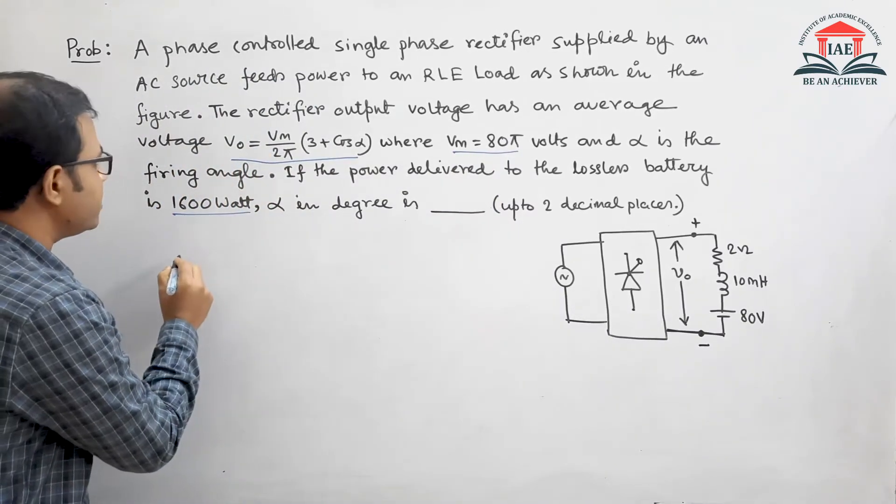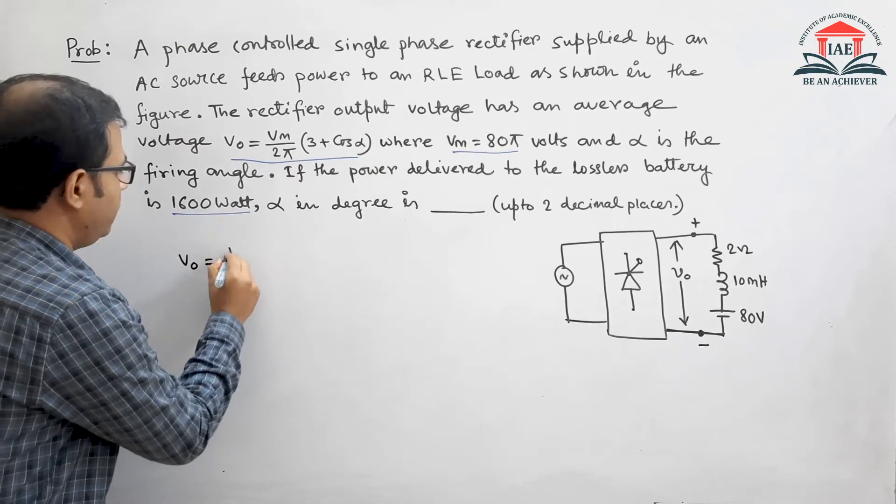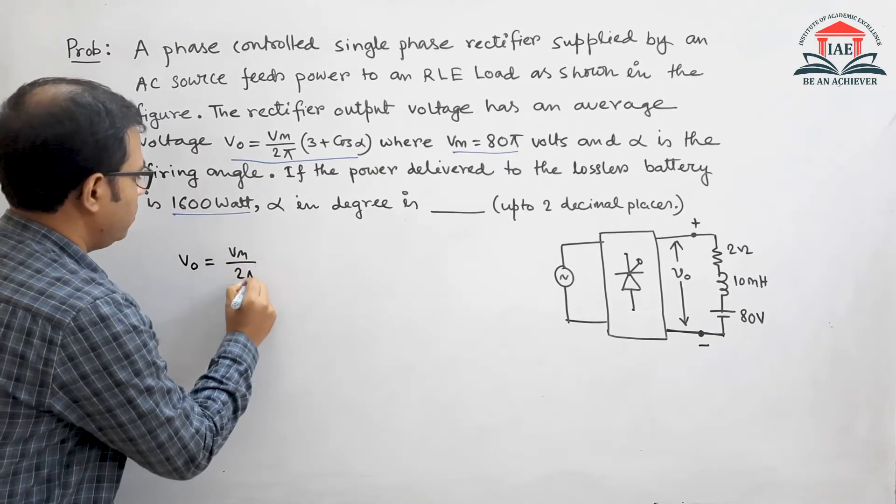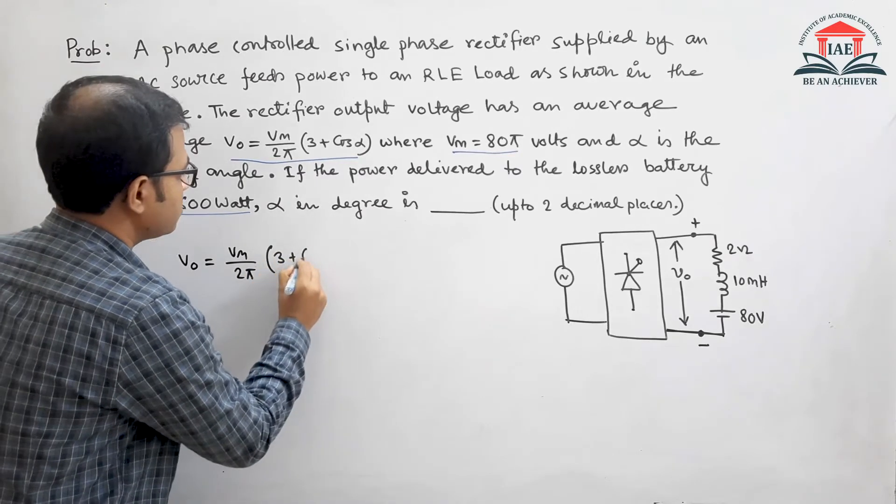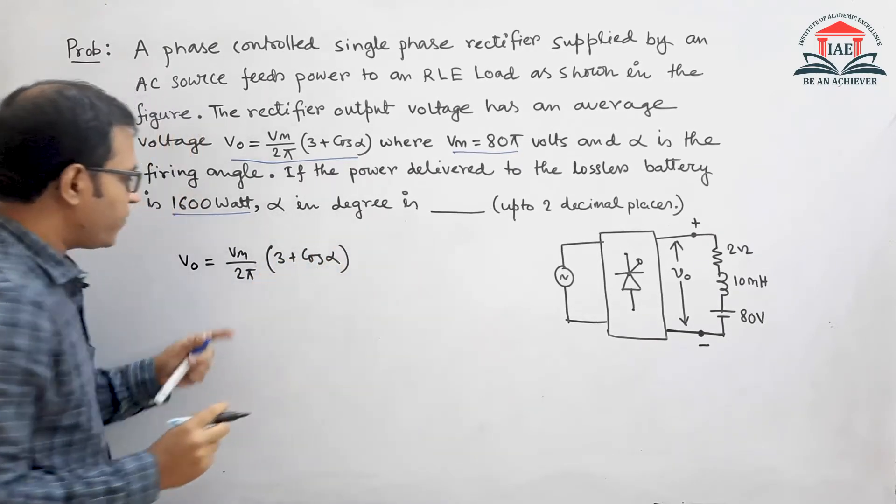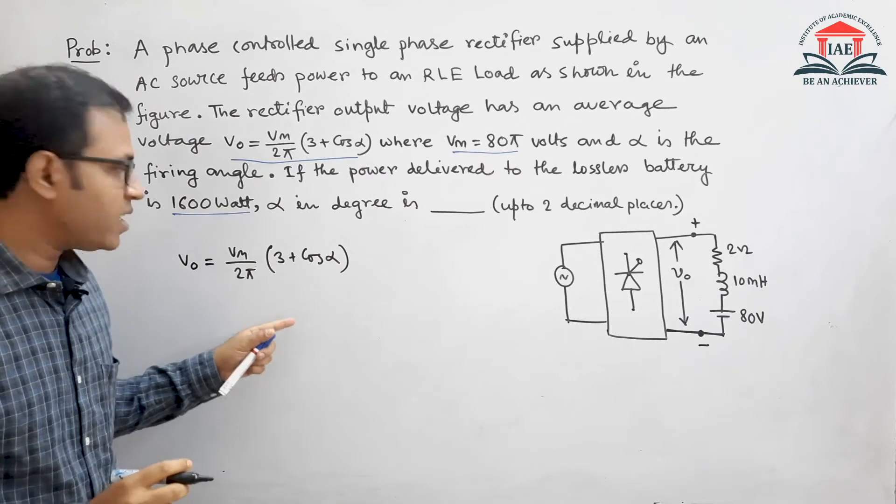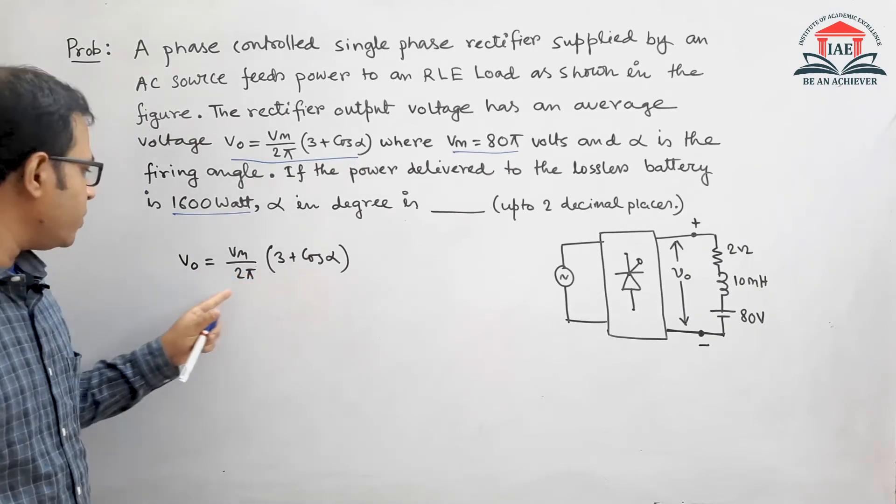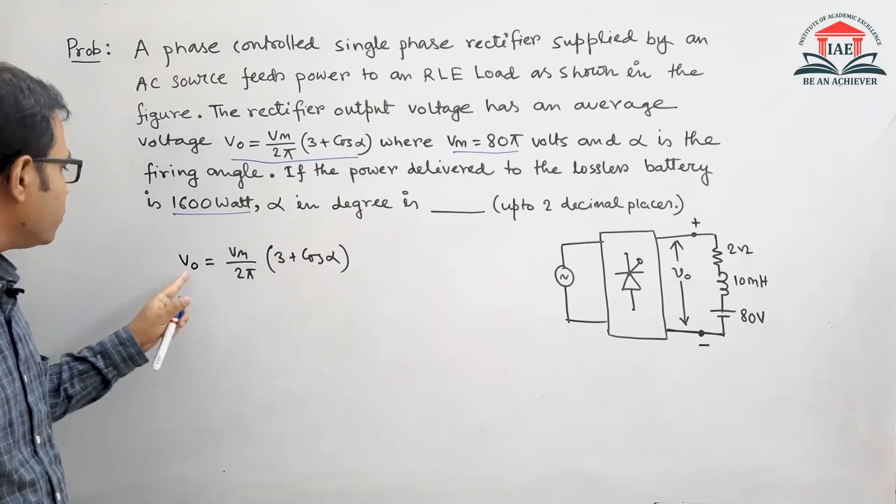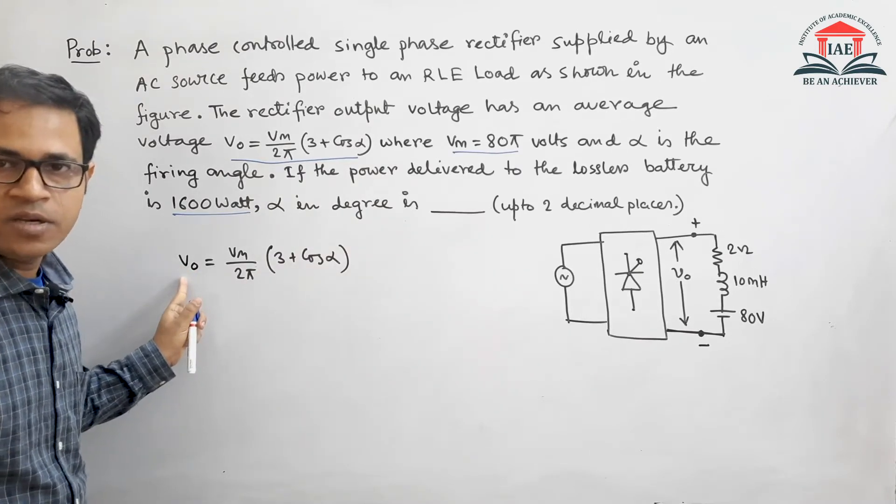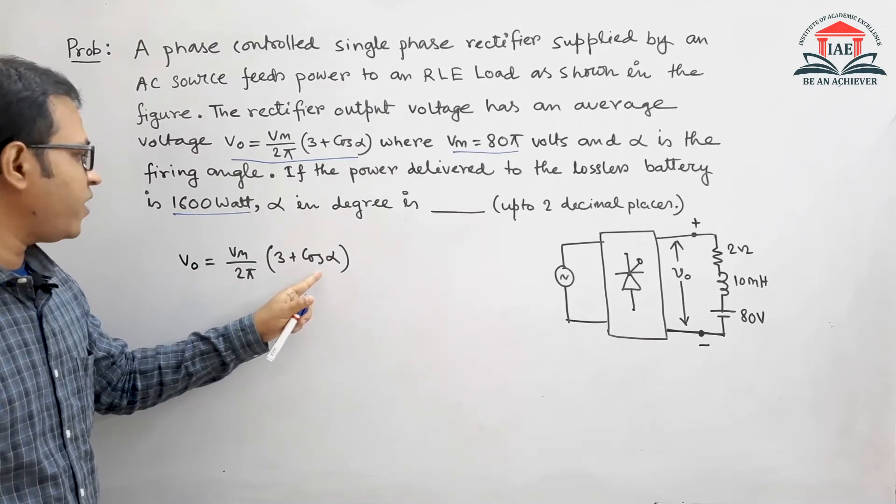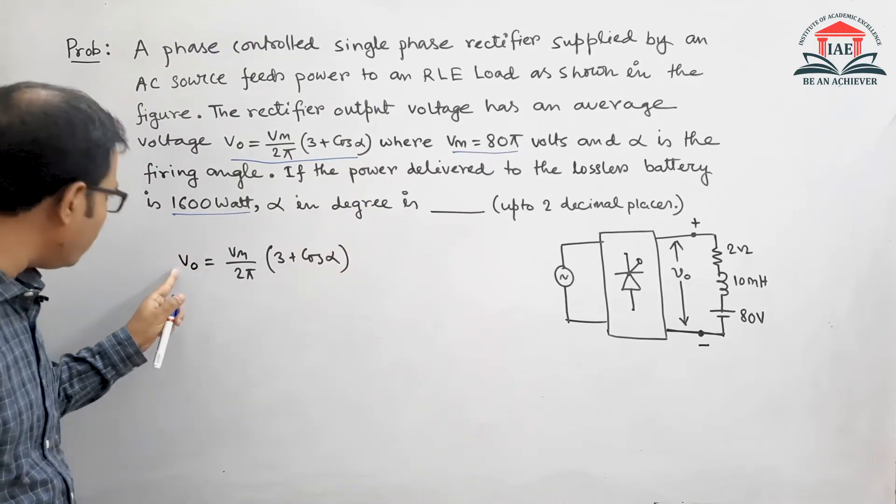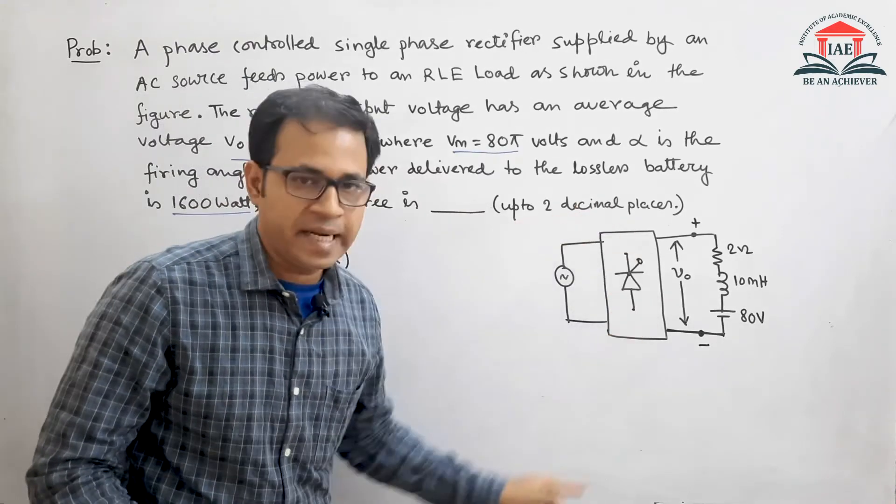Let us write down the output voltage as given: V0 equals Vm by 2π times (3 plus cos α). From this expression, we need to find cos α. But to find cos α from this equation, we need to know the value of the output voltage V0, because from one expression you can't find two unknowns. So you have to find V0 from the given data.